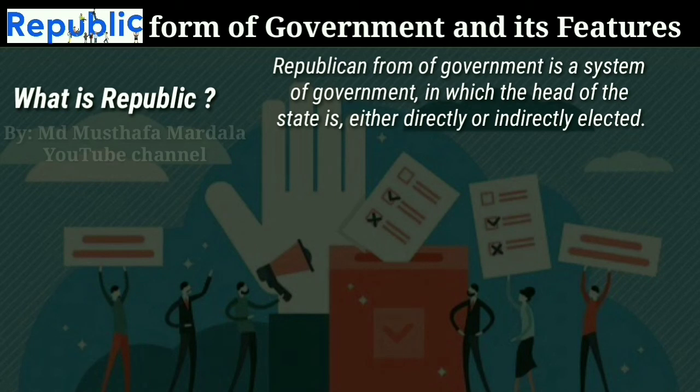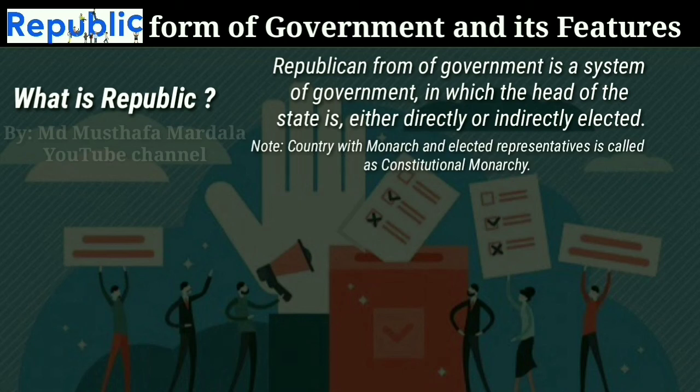Another important factor to note is that a country with a king and free elections is called a constitutional monarchy, not a republic. A constitutional monarchy resembles a republic because the constitution was placed to remove or restrict the absolute power of the king and install democratic institutions. The best example is the United Kingdom.